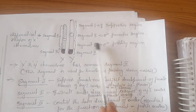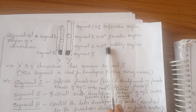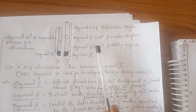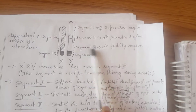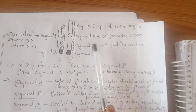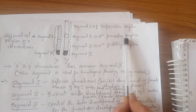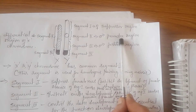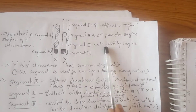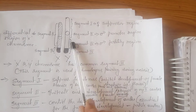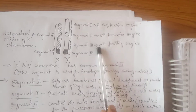Region 3, or segment 3, controls the later development of the anther, making it more functional if present. Segment 2 promotes initial anther development, and then segment 3 plays a very important role in the later development of the anther. If region 3 is absent, it causes male sterility.